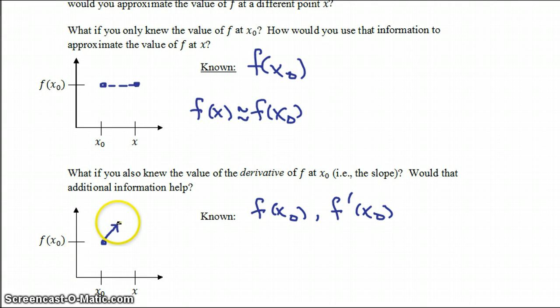In this case, our best approximation for f evaluated at the point x would just be a continuation of that line. So f of x is approximately equal to our starting point, f of x0, plus our derivative, our slope, times the amount that x changed.